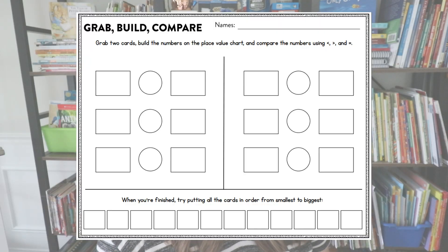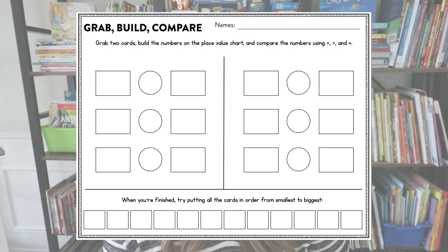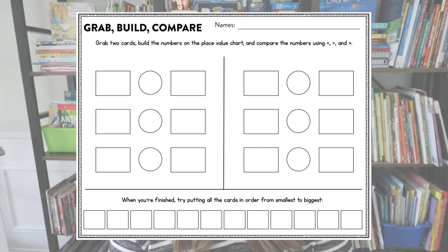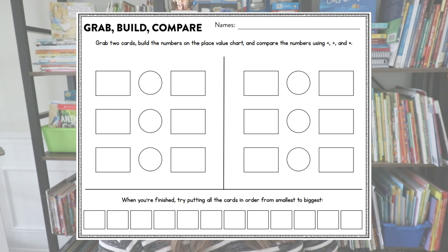I had about 10 to 12 minutes for students to do this activity, and many of them got somewhere between three and four comparisons completed as they pulled cards, built each number, and compared them. I also wanted to make sure I had an extension already built in. At the bottom of the sheet it says: 'When you're finished, try putting all of the cards in order from smallest to largest and then write them in the box.' I believe two pairs of partners were able to start that extension, and one even finished.